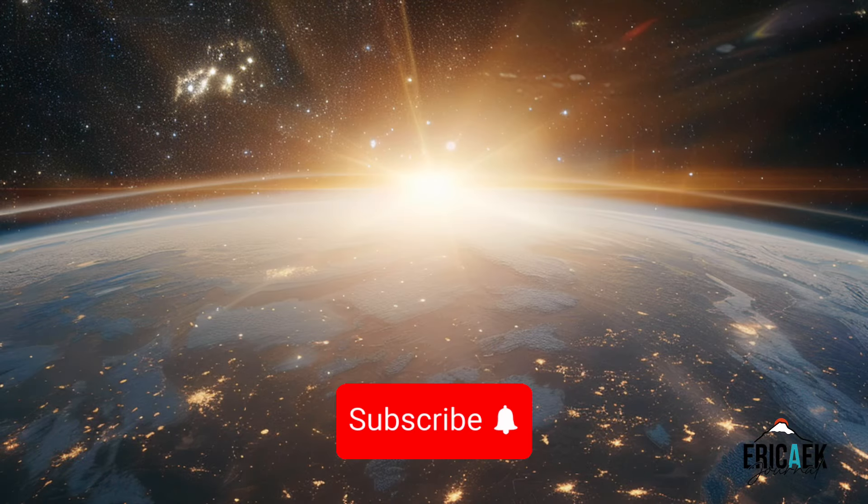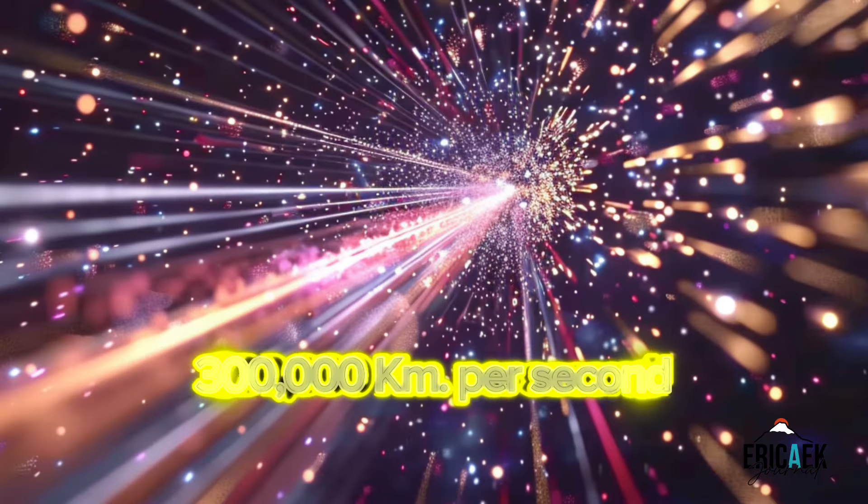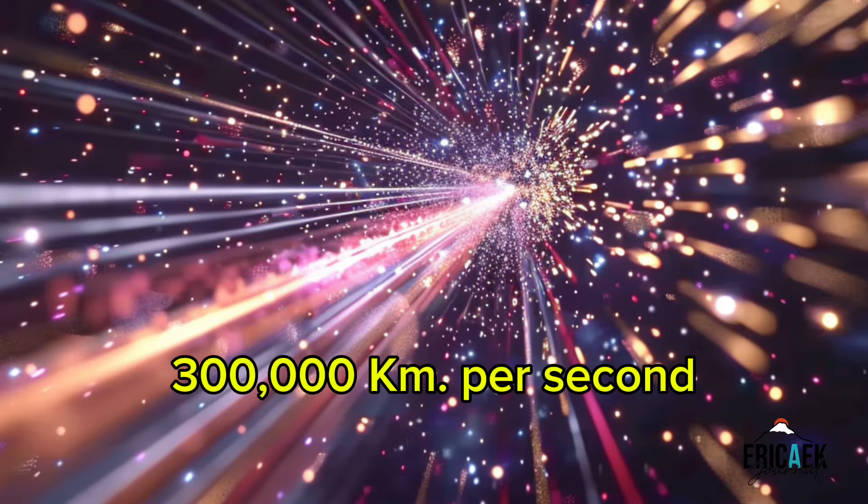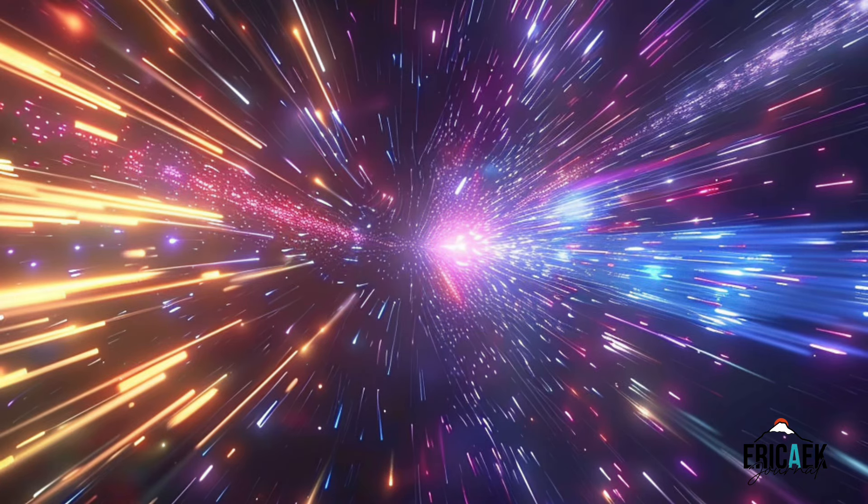Light is the fastest thing in the universe, traveling at a speed of approximately 299,792 kilometers per second, or about 186,282 miles per second. This incredible speed means that light can travel vast distances in a short amount of time.